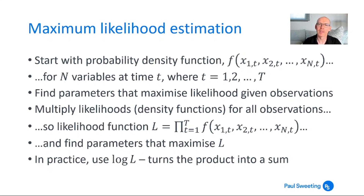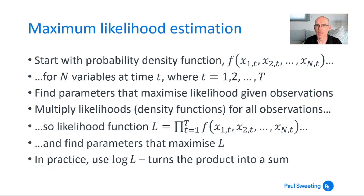If we want to find the set of parameters that maximizes the likelihood given the observations for each variable over each time period, we want to calculate the probability density at each time t for f(x1, x2, ..., xn), doing that for t = 1, 2, ..., T. We then want to multiply all of these densities together: f(x1,1) · f(x2,1) · ... · f(xn,1), multiplied by f(x1,2) · f(x2,2) · ... · f(xn,2), all the way up to t = T. Multiplying those together gives us our likelihood function L.